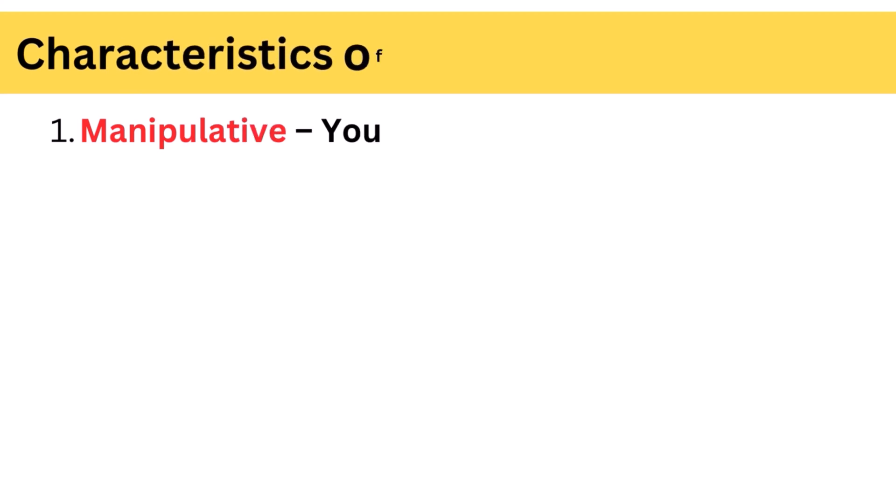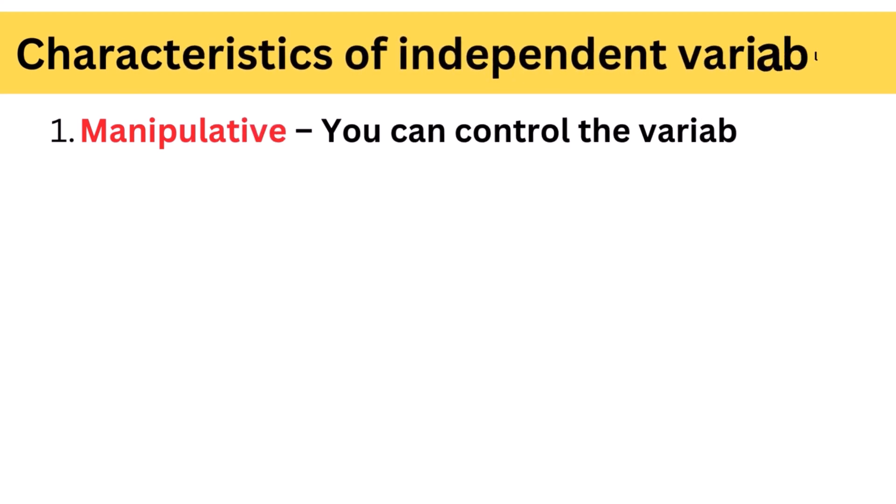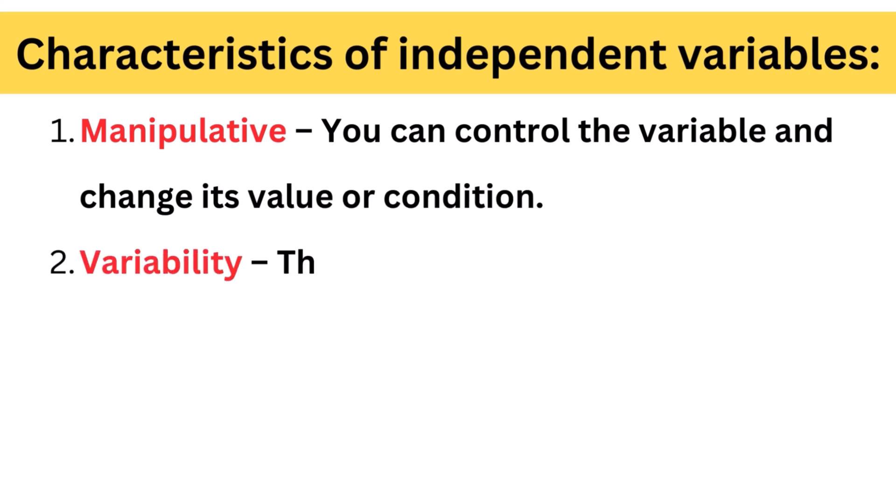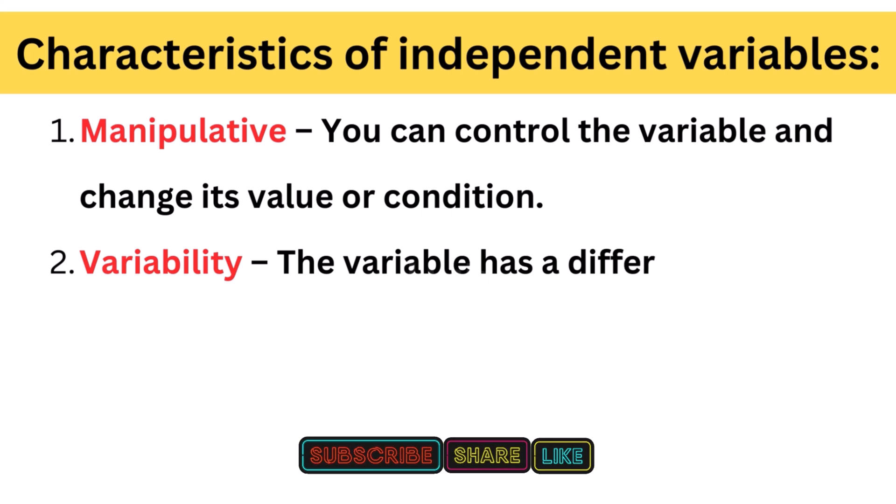The characteristics are the presumed causes of the outcome you investigate in the research. Manipulative: You can control the variable and change its value or condition.